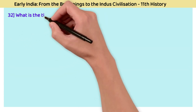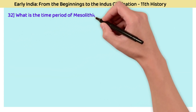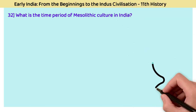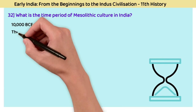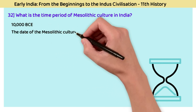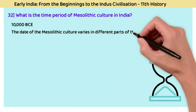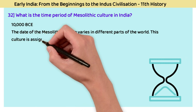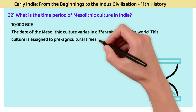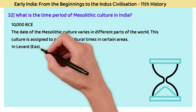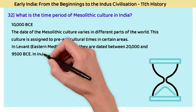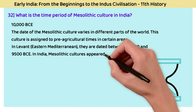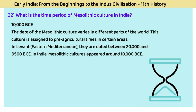Question 32: What is the time period of Mesolithic culture in India? The answer is around 10,000 BCE. The date of Mesolithic culture varies in different parts of the world. In the Levant (eastern Mediterranean), it is dated between 20,000 and 9,500 BCE. In India, the Mesolithic culture appeared around 10,000 BCE.